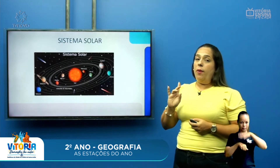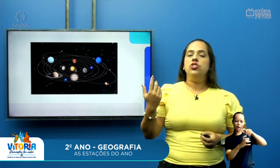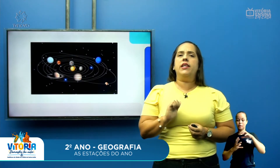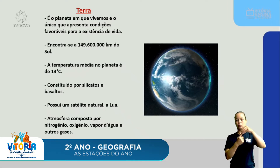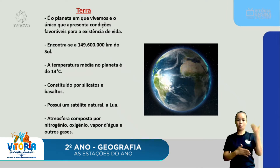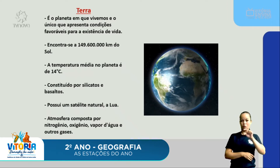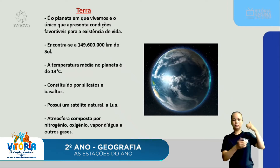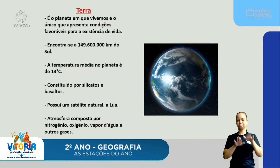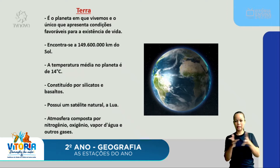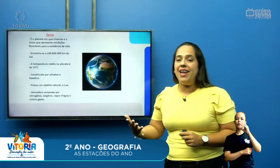A gente aprendeu na aula passada sobre o sistema solar. O Sol está lá no centro, os planetas em volta, todos girando em volta do Sol. E um desses planetas é o planeta Terra, que é o planeta em que a gente vive. O planeta em que vivemos é o único que apresenta condições favoráveis para a existência de vida. Ele se encontra a 149 milhões e 600 mil quilômetros do Sol, com temperatura média de 14 graus, constituído por silicatos e basaltos, possui um satélite natural que é a Lua, e nossa atmosfera é composta por nitrogênio, oxigênio, vapor de água e outros gases.